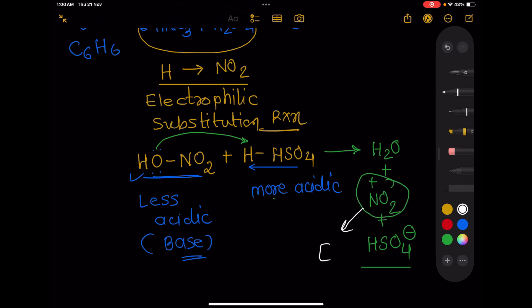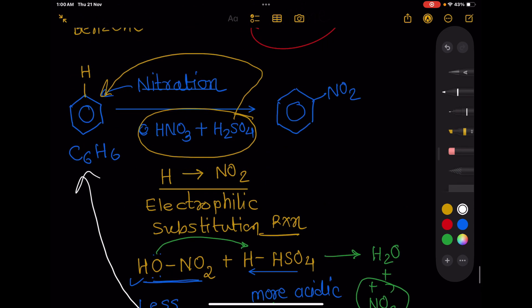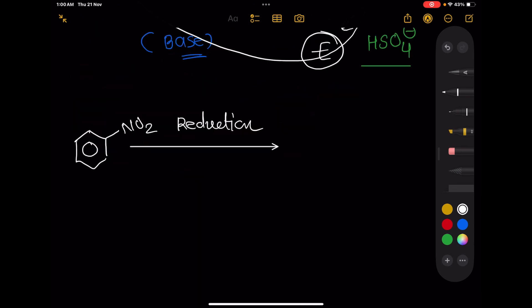Now reduction of nitrobenzene gives aniline in the presence of a selective reducing agent H2/Pd/C. This is called hydrogen palladium carbon reagent.